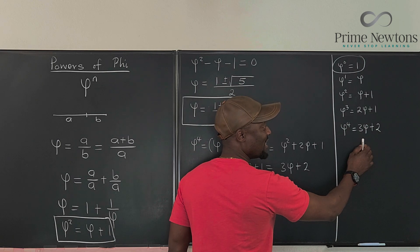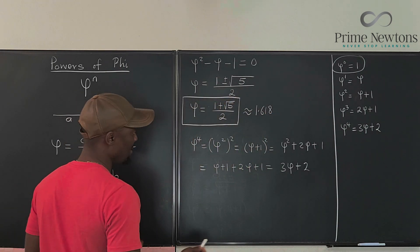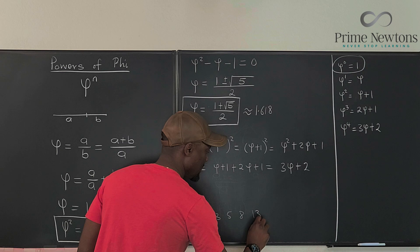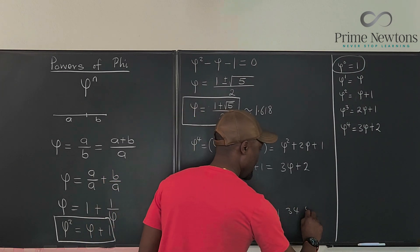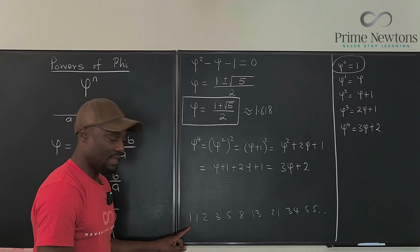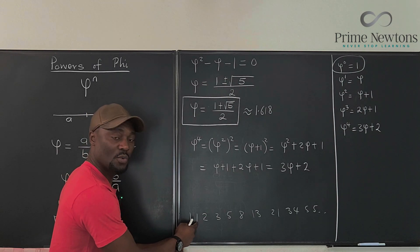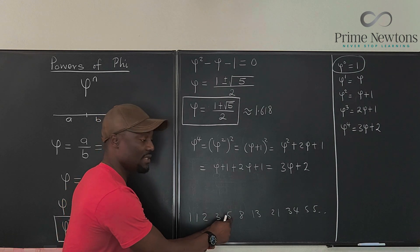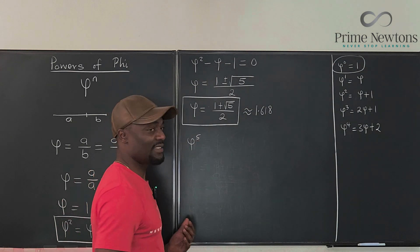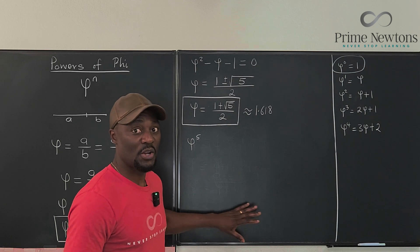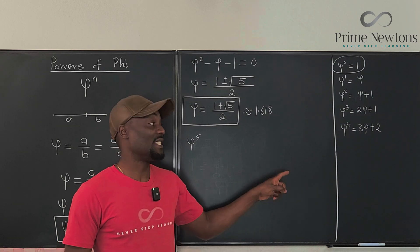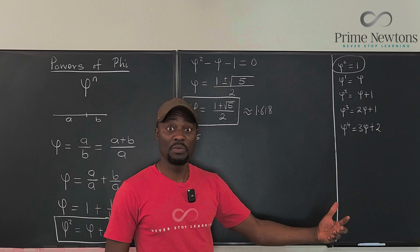The Fibonacci sequence is: 1, 1, 2, 3, 5, 8, 13, 21, 34, 55, and so on. You get it by starting with one; the next term is the sum of the last two. So nothing plus one is one, one plus one is two, one plus two is three, two plus three is five, and so on. We can predict the pattern will continue. This is a recursive formula, so each result depends on the previous one — exactly what we're doing with the powers of phi.